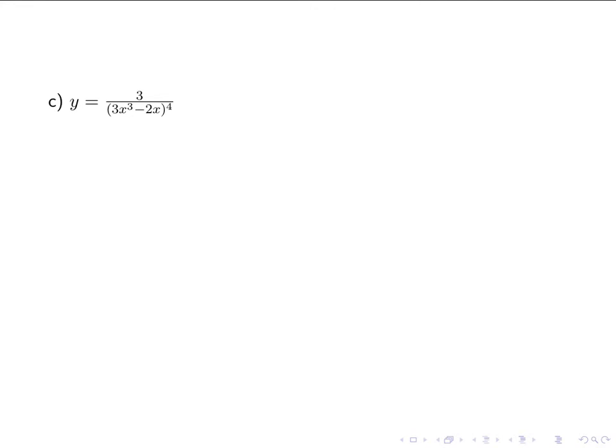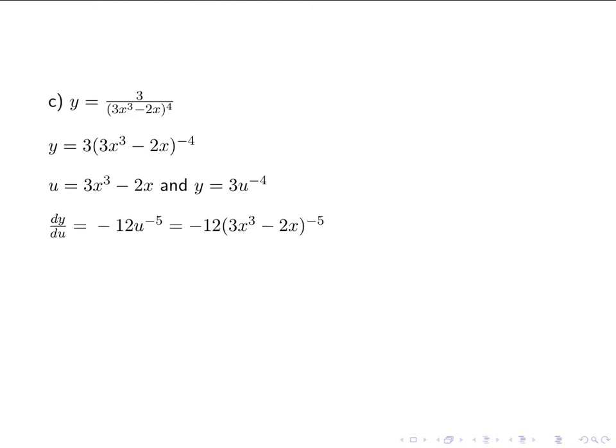Let's try another one: 3 divided by (3x cubed minus 2x) to the fourth. We have a fraction, so we use rules of exponents and bring the denominator up to the numerator by making the exponent negative. So 3 divided by something to the fourth becomes 3 times something to the negative fourth. We let u be the inside function, 3x cubed minus 2x, and y becomes 3 times u to the negative fourth. dy/du by the power rule is negative 12u to the negative fifth, which becomes negative 12 times (3x cubed minus 2x) to the negative fifth. du/dx, also the power rule, is 9x squared minus 2.